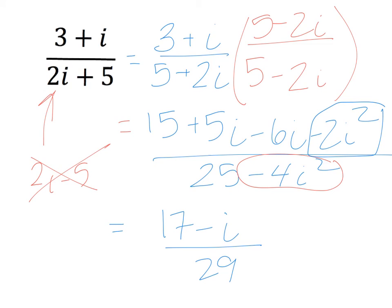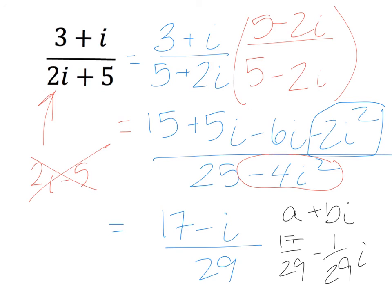Some books, and sometimes I'll say, write it in the form a plus bi, and so then we just end up getting 17 over 29 minus 1/29 times i. And that puts it in that a plus bi form. Quick little review for you.